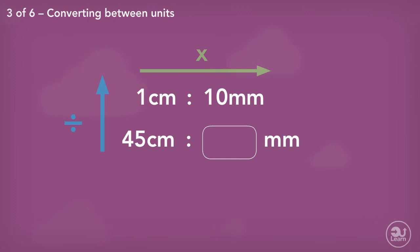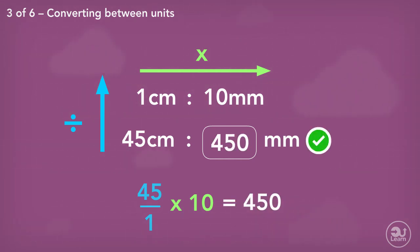Using our divide up, multiply across technique, we can easily convert this. 45 divided by 1, then timesing across by 10. This gives us 45 centimeters is equal to 450 millimeters.